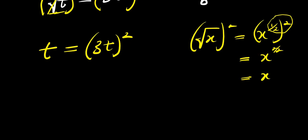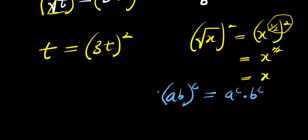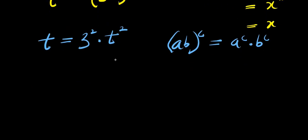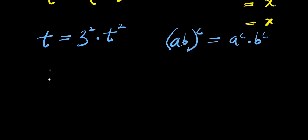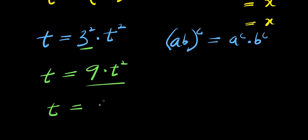Now from here, if you have a times b raised to the power of c, this equals a power c times b power c. So we have t equals 3 power 2 times t power 2. That is, t equals 9 times t squared, so t equals 9t squared.